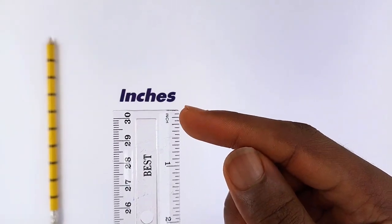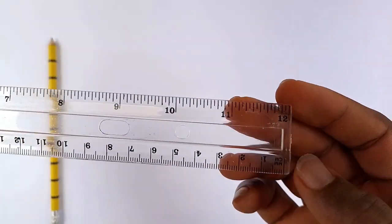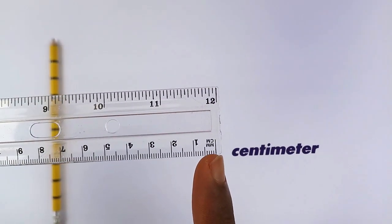So this side of the ruler is inches labeled from 1 to 12, while the other side is centimeters from 1 to 30.